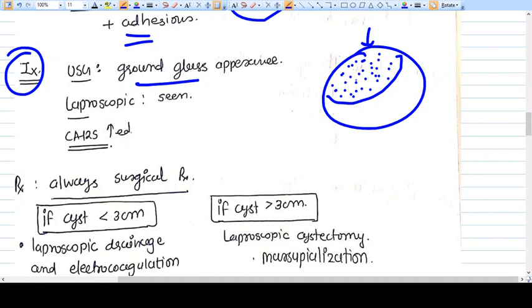What is the investigation? We do ultrasound, and on ultrasound we can see a ground glass appearance. This is the ovary, and this appearance is ground glass appearance seen in the TVS. We can call it endometrioma at that time.